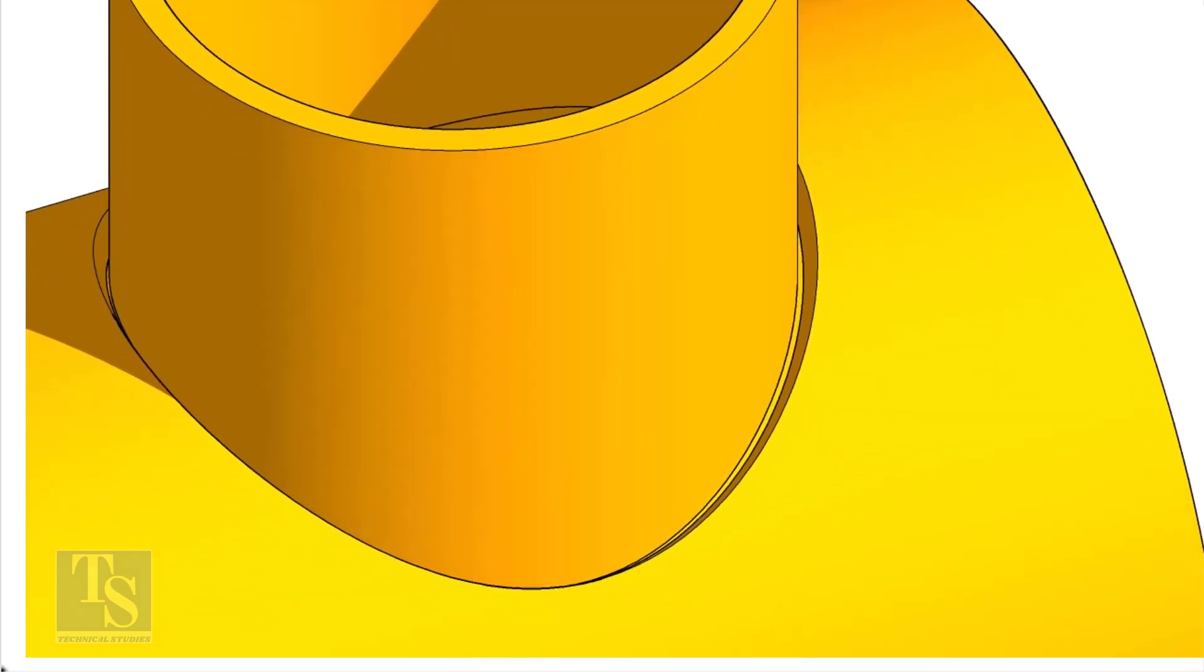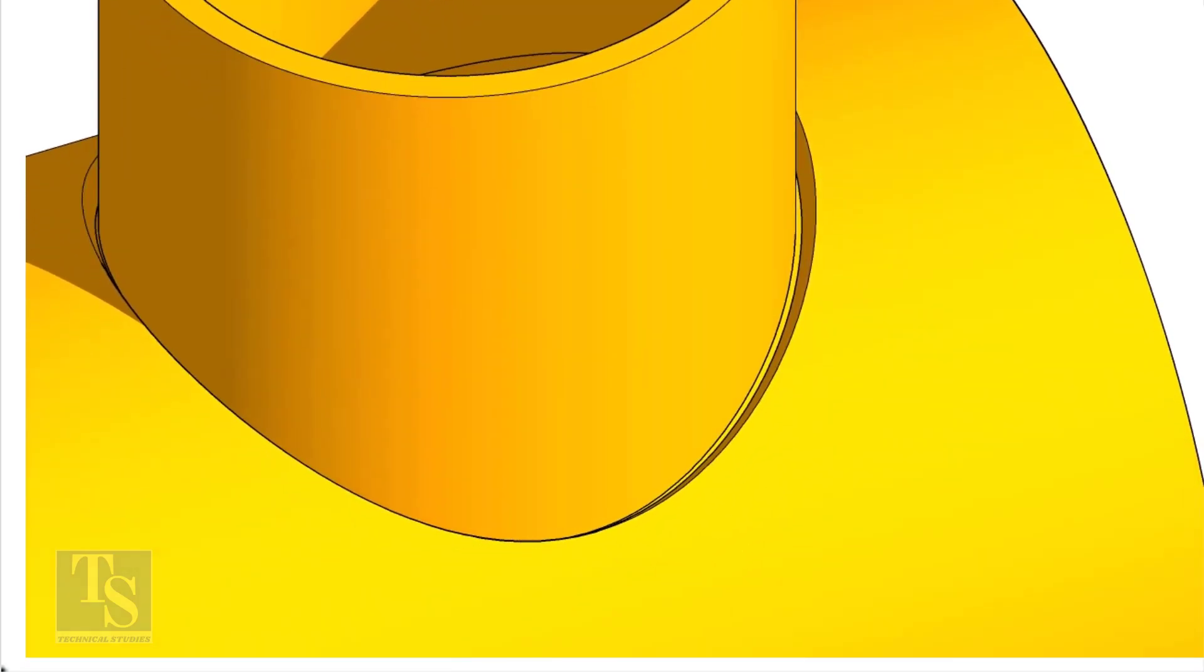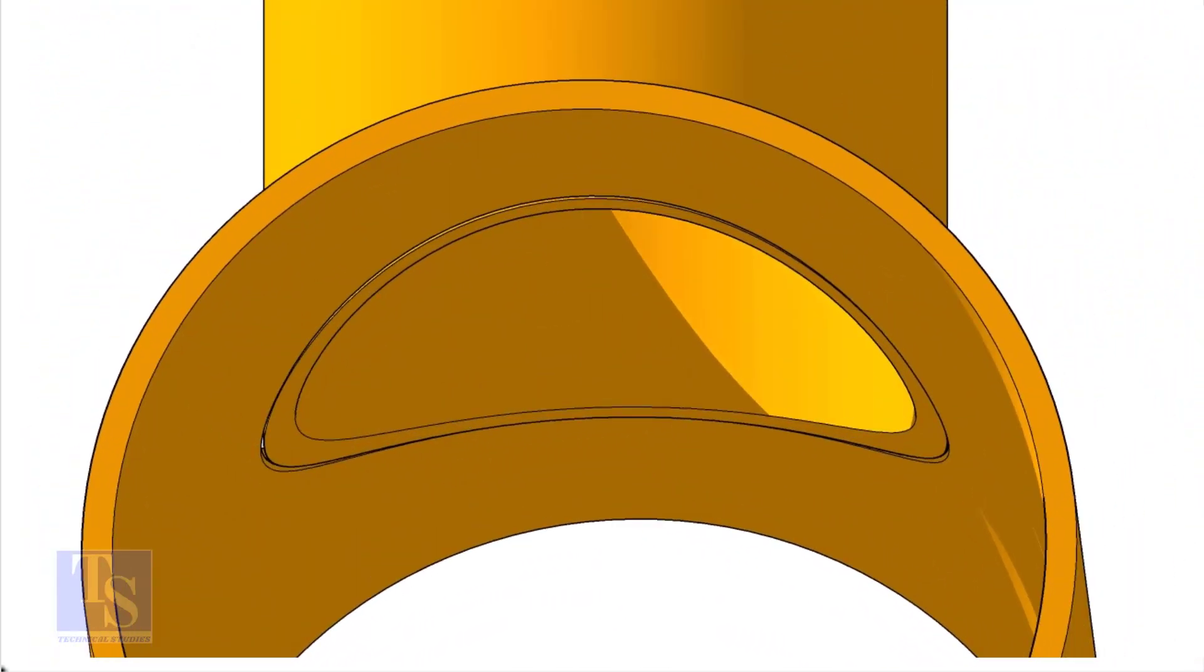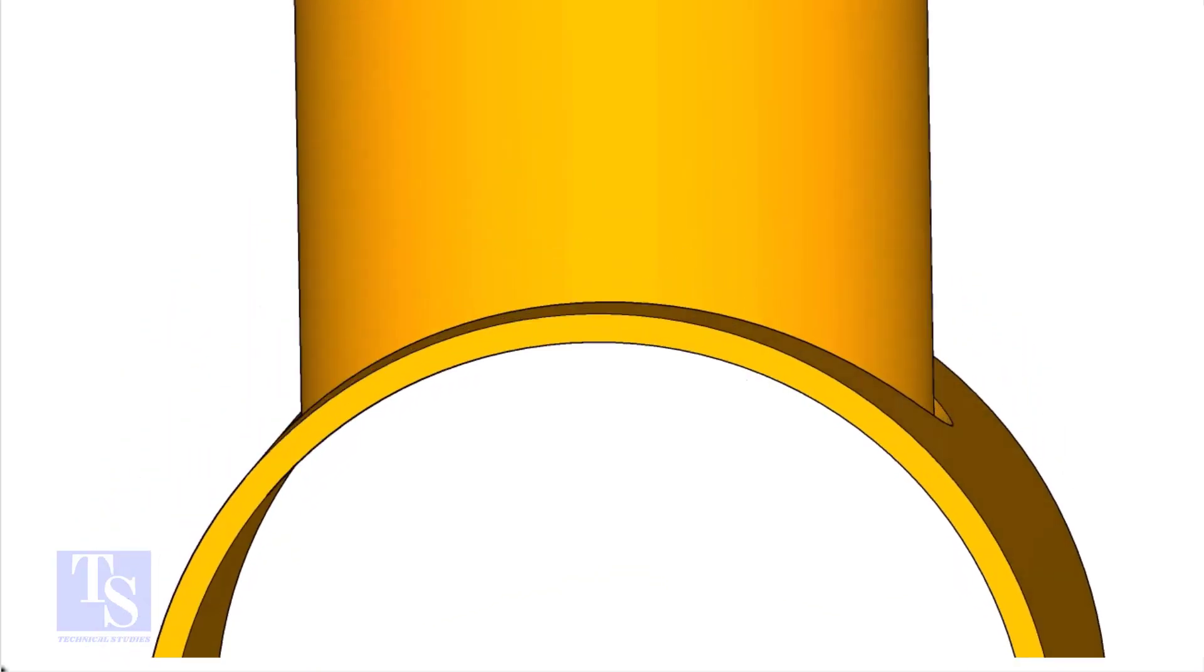On the branch pipe, there is no bevel preparation, but the cut-back cut is done. The end of the branch is level with the inside diameter of the header pipe.